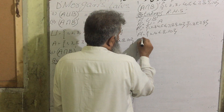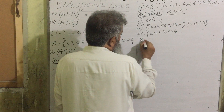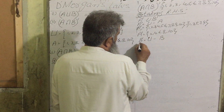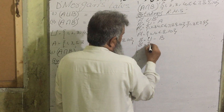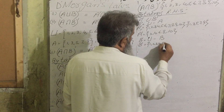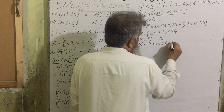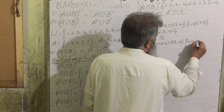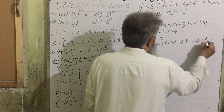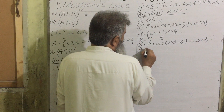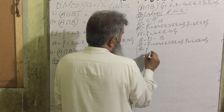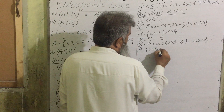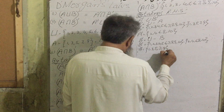B complement = universal set minus B = {1,2,3,4,5,6,7,8,9,10} minus {2,4,6,8,10}. So B complement = {1,3,5,7,9}. Therefore A complement union B complement = {2,4,6,8,10} ∪ {1,3,5,7,9} = {1,2,3,4,5,6,7,8,9,10}.